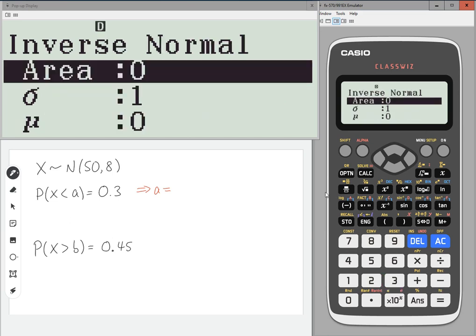Now the area that it uses on the calculator is always to the left. So in this case it's always useful to draw a diagram with any normal distribution problem. But the idea here is that to the left of a is 0.3. So the area that you are typing in is 0.3.